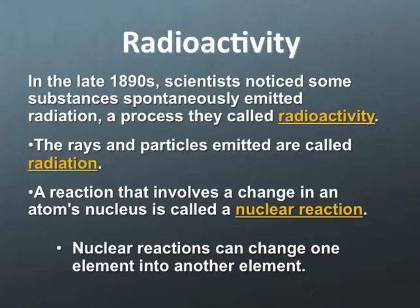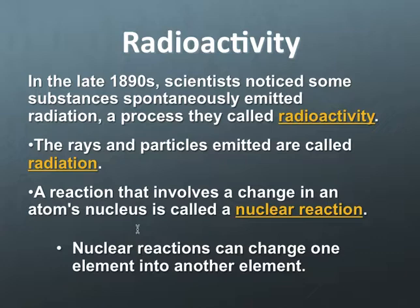First I want to define some things and start talking about radioactivity. In the late 1890s they started discovering that some substances were releasing radioactivity. Early experiments thought certain substances were absorbing energy from the Sun and releasing it later, but those experiments failed - what was actually happening is these substances were emitting energy on their own. The rays, particles, and energy released from these substances is what we call radiation, and this radiation is a reaction that changes the nucleus of an atom - therefore we call them nuclear reactions. This is the only type of reaction that can actually change one element into another.